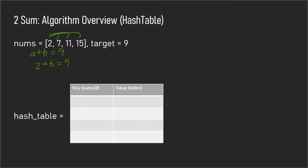First, we create a hash table representation of the nums array. We do this to take advantage of constant lookup time, as opposed to using an array or list of tuples which would give linear lookup time. We create the hash table with the key being the current element and the value being its index, since that's what the question asks us to return. Looping through, we'd have elements 2, 7, 11, 15 at indices 0, 1, 2, and 3.